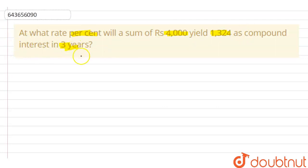Let me write here we have given that this is our principal amount, P equals 4000 rupees. And here it is also given that yield 1324 as compound interest, this means we have compound interest amount CI equals 1324. And it is also given that in three years, that means we are having time t equals three.